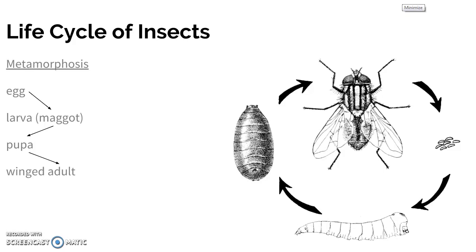As far as flies go, when flies turn into larva, that is when we call them maggots. So if you've ever found maggots on rotting meat or on something, it is the larval stage of the fly.